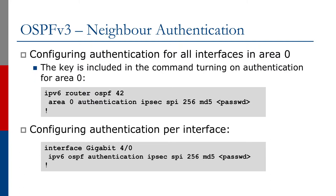For OSPF version 3, we can configure authentication for interfaces in an area by starting up the OSPF process and doing 'area 0 authentication ipsec spi 256 md5' and then supplying the key to be used there. Or we can configure authentication per interface.